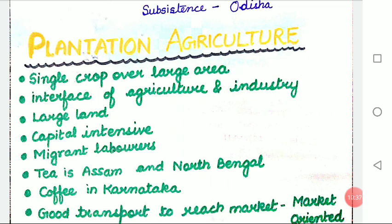Every work like transplanting, harvesting, processing, etc., is done on scientific lines. Huge outlay of capital, use of fertilizers and special farm machines give good production. Cheap and skilled labor is used for cultivation. The main objective is to produce high-quality products for export to earn huge returns. Such farming is similar to an industry on account of its planned organization for commercial purpose. A well-developed network of transport and communication connecting plantation areas, processing industries and markets plays an important role.